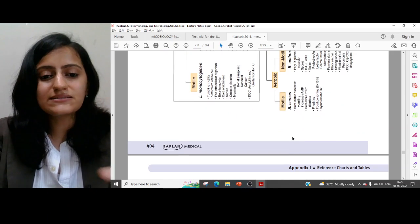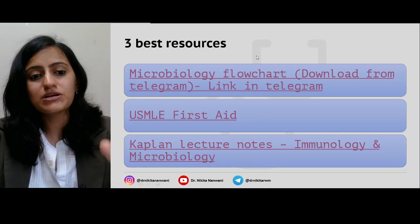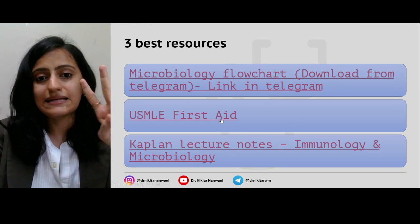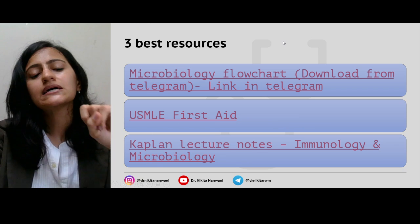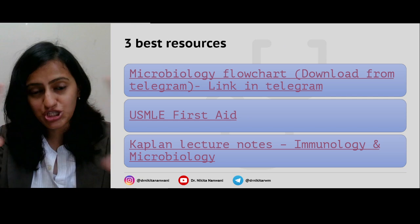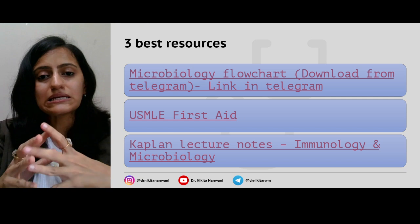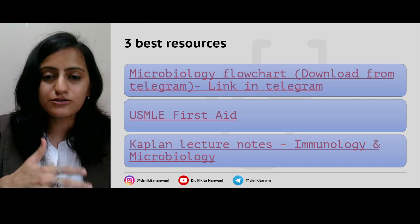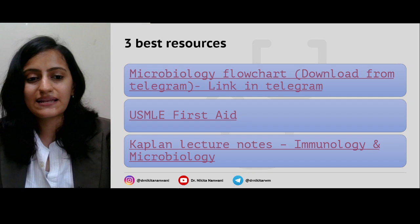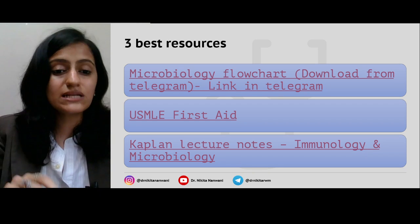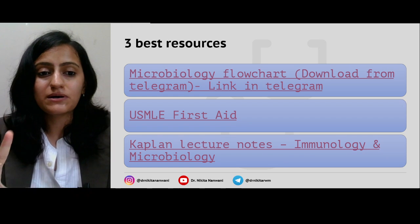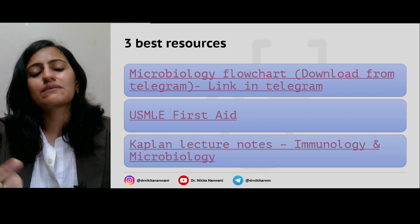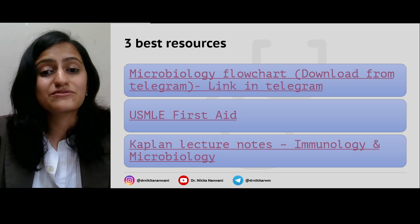Make sure you at least revise these charts — everything is summarized here. So the three best resources are: the flowchart you can download from the Telegram group link in the description, the USMLE First Aid, and the Kaplan Lecture Notes MCQs and appendix charts. Try to integrate these, and most importantly, since you are targeting NEET PG, look at previous year questions. Whatever point is highlighted in these resources that is not in your notes, add it on, so that by the end of the first reading you have one place to go for the next revision — no multiple resources.